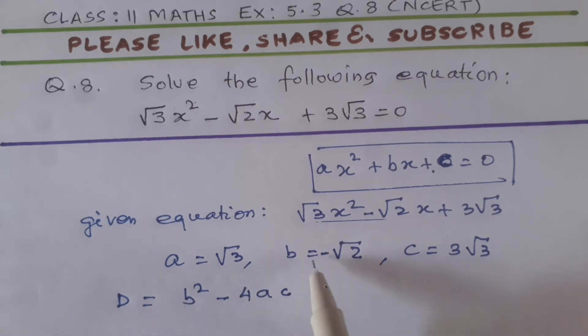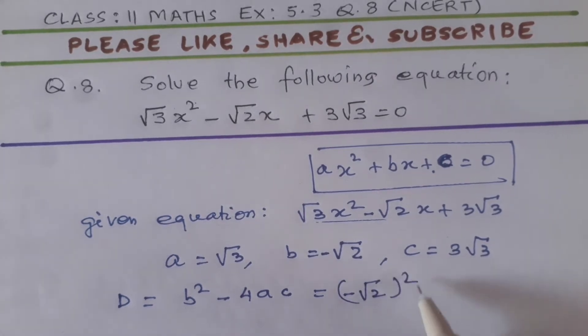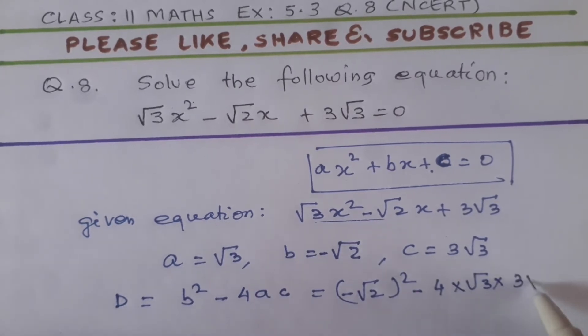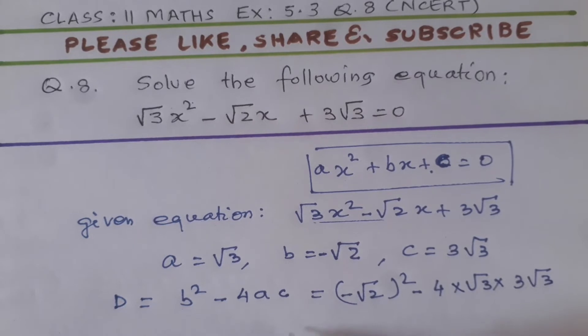B squared means minus root 2 squared minus 4 A C. A equal to root 3, C equal to 3 root 3. So on further simplification, this minus root 2 square will be 2, root will be cancelled with square and minus minus will be plus.